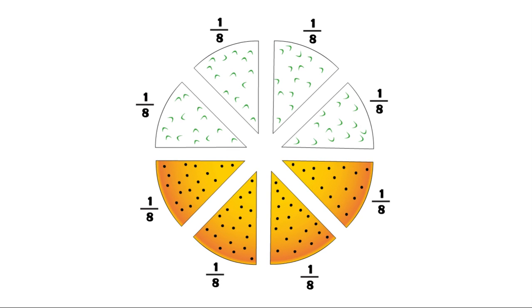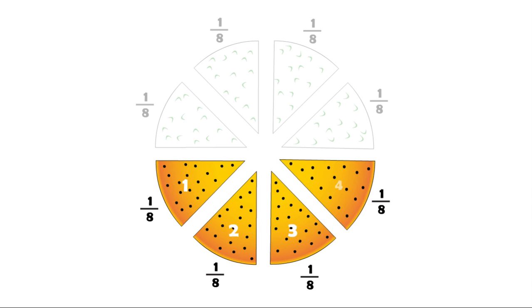Look carefully at the whole pizza. How many slices have olives? If we count the number of slices that have olives, we will see that there are four slices. Or we can say that four-eighths of the pizza has olives.